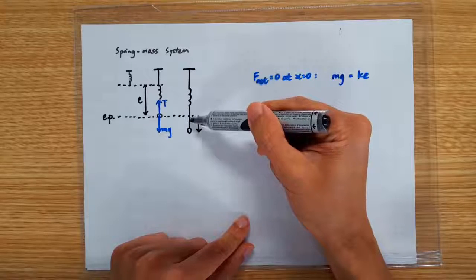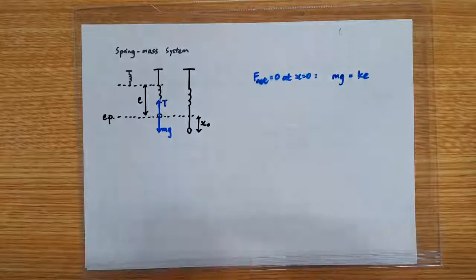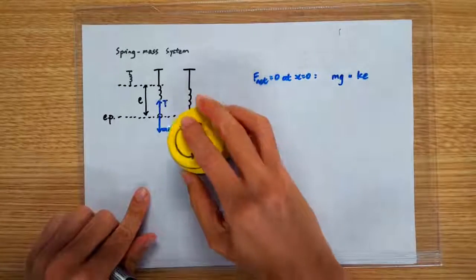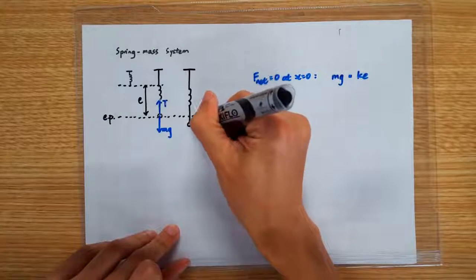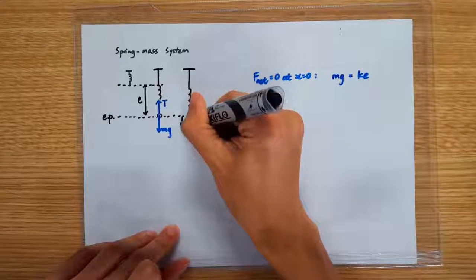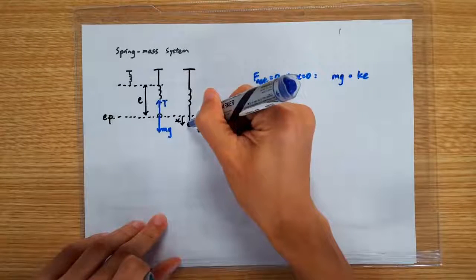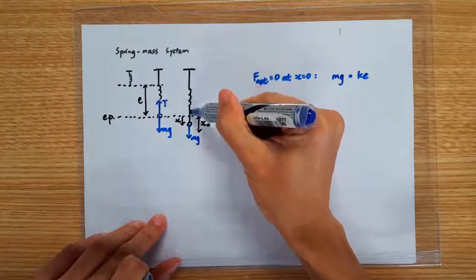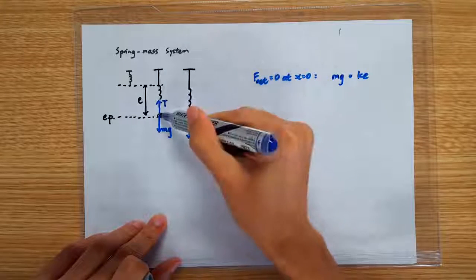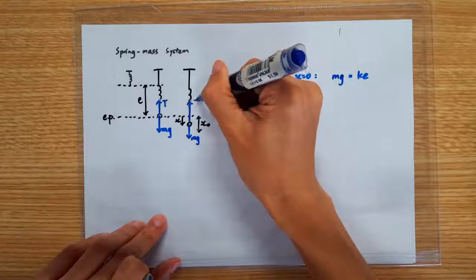That means it's going to oscillate between x0 below and x0 above the equilibrium position. But let's say I'm interested at one particular displacement — let's say at displacement x. At this displacement, the weight is still going to be mg, but the spring is actually more stretched compared to when it was at the equilibrium position, and so the tension is going to be larger.